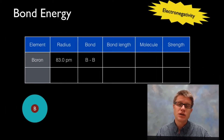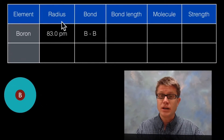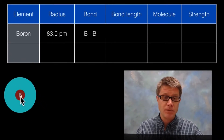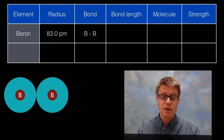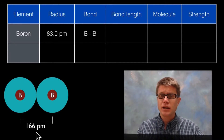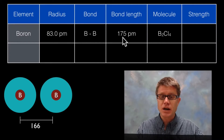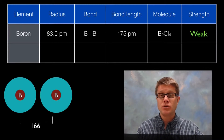What contributes to that bond energy? It's going to be the electronegativity of all the atoms involved in that molecule. So let's say we were to look at boron. Boron is going to have an atomic radius of 83 picometers — the distance from the center of the nucleus to the outside. So if we were to connect a boron to a boron, we would anticipate the bond length to be twice that: 166 picometers. But if we actually measure the bond length in a molecule and it ends up being 175 picometers, they're farther apart than expected, which means we're going to have a very weak bond between these two atoms.